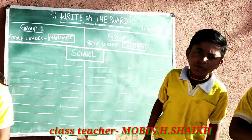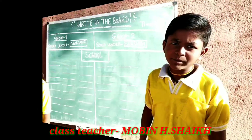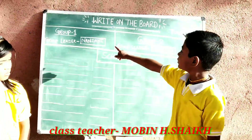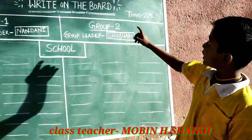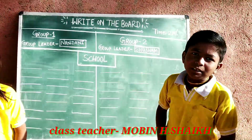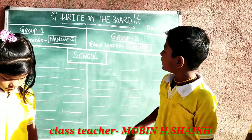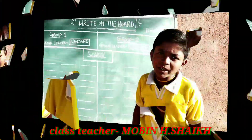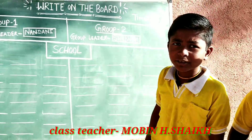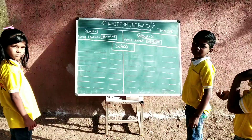First, I will tell you the rules of this activity. First, we make two groups. Group one is Bengali and the second group is Uber. Our teacher gives one subject. This subject name is 'school.' Now, one by one, come here and write one word related to this subject. Now let's start this game.